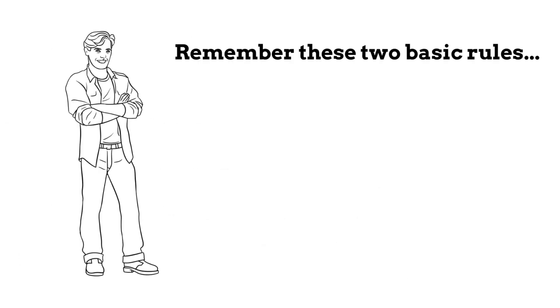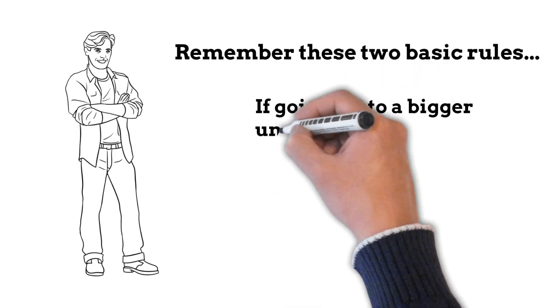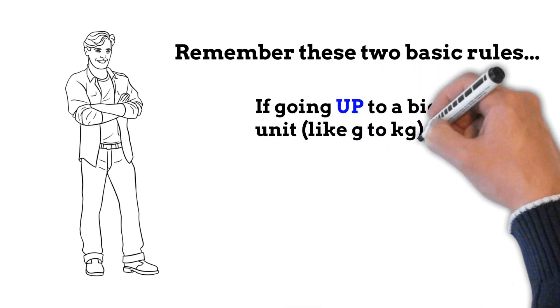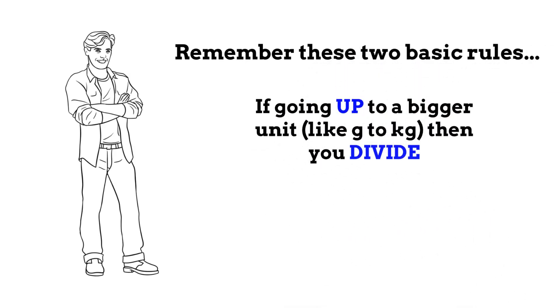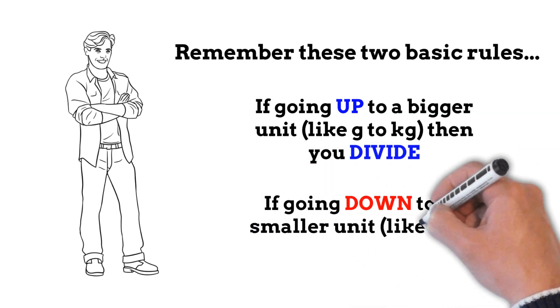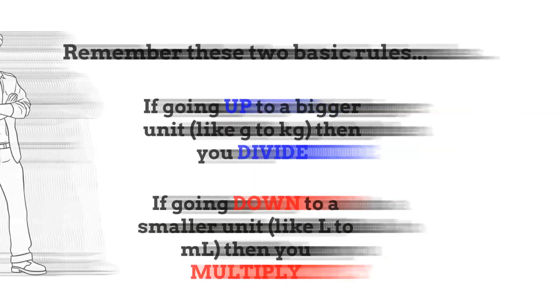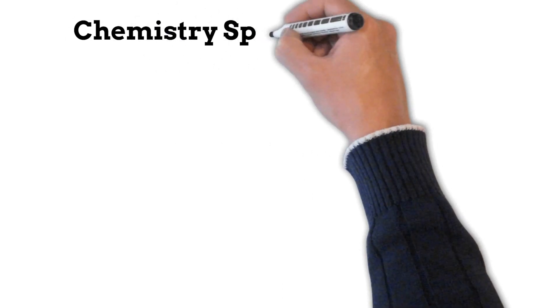It's pretty easy — just remember these two basic rules. If you're going to go up to a bigger unit, like grams to kilograms, then you divide. If you're going to go down to a smaller unit, like liters to milliliters, then you multiply.